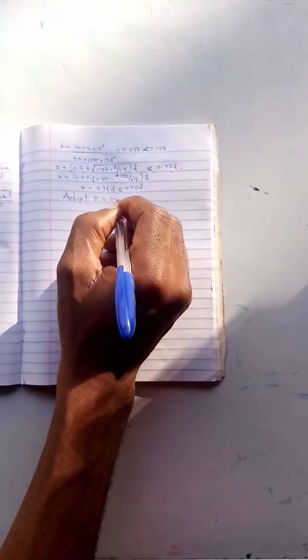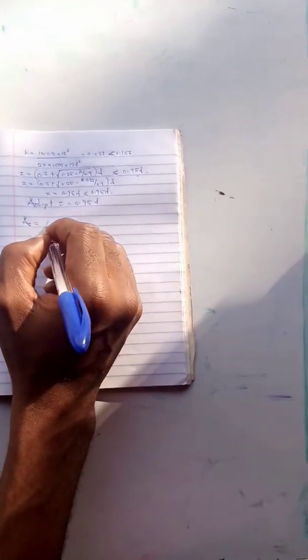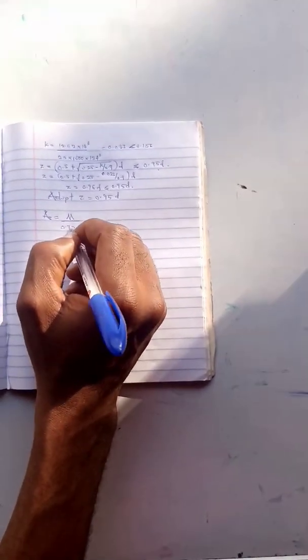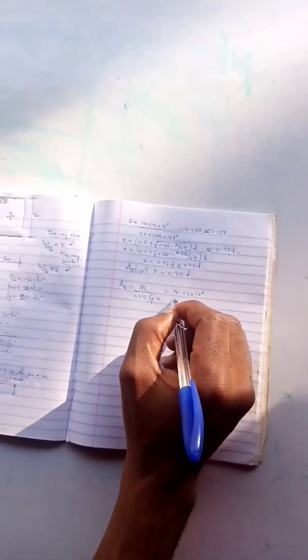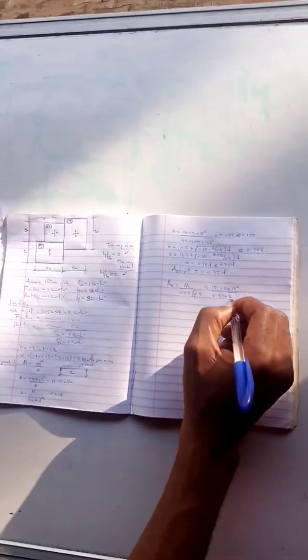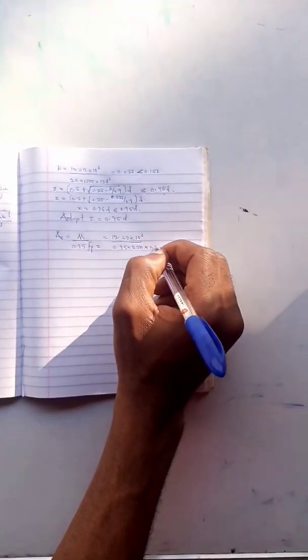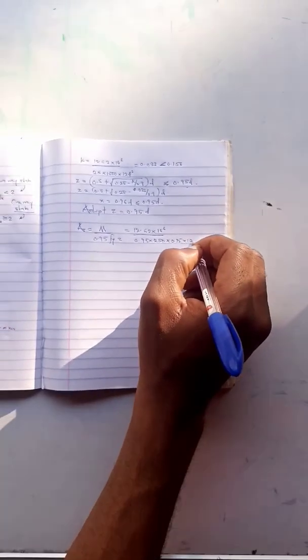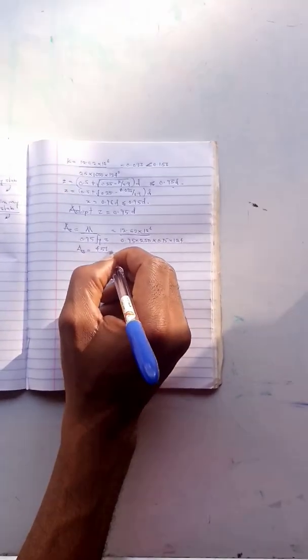From here we can have our area of steel which is the moment over 0.95 times fy times z. We have 12.62 times 10 to the 6 divided by 0.95 times 250 multiplied by 0.95 times 124. The area of steel is 451.1 mm square.